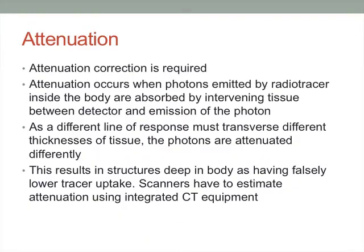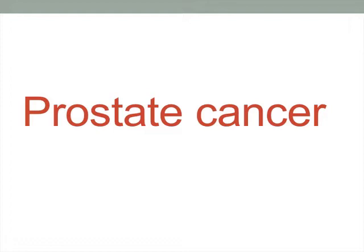Attenuation correction is required because photons emitted by the radiotracer inside the body are absorbed by intervening tissue between the detector and the emission point. As different lines of response traverse different thicknesses of tissue, the photons are attenuated differently, resulting in structures deep in the body having a falsely lower tracer uptake. Scanners estimate this attenuation, usually with the help of a CT scan.